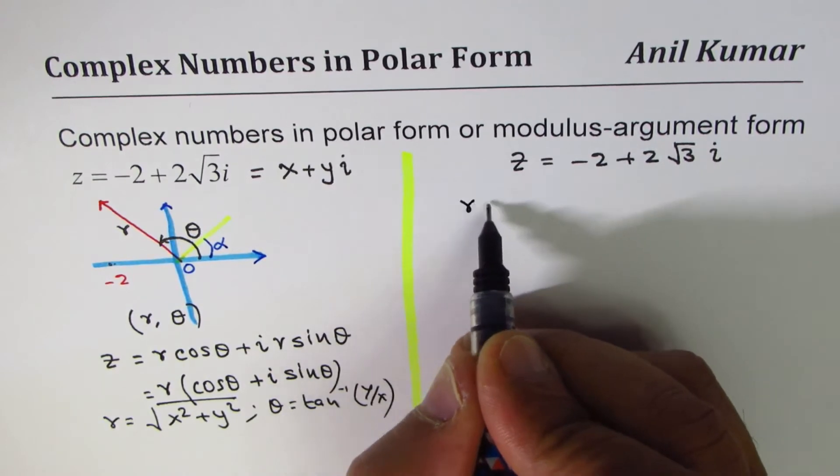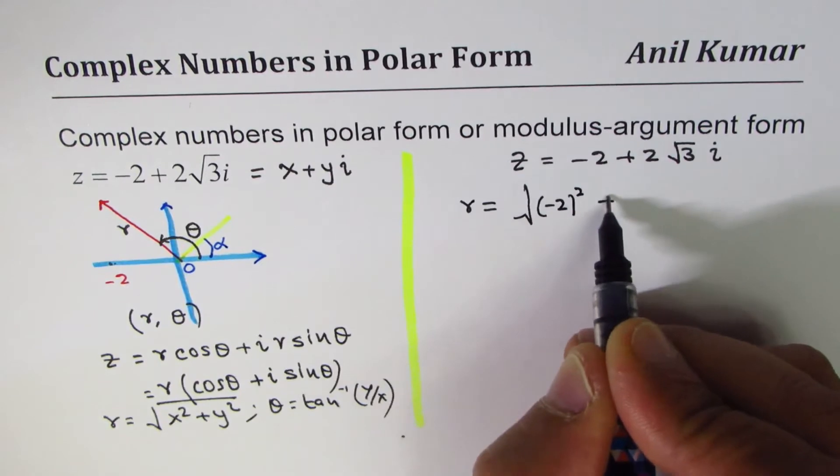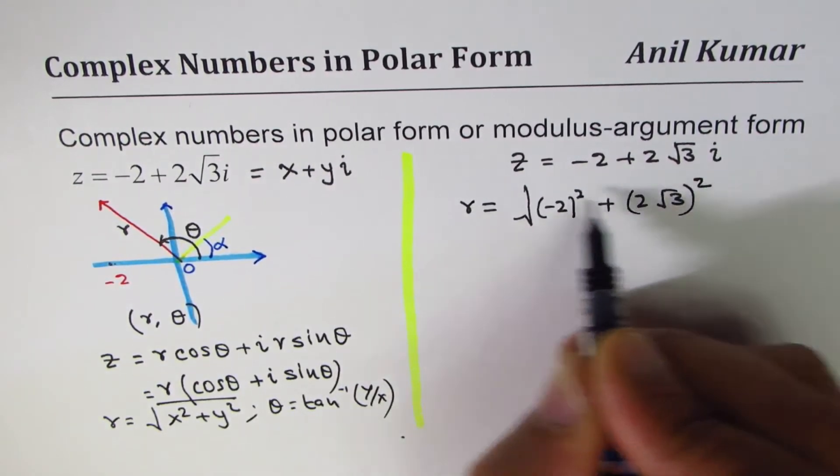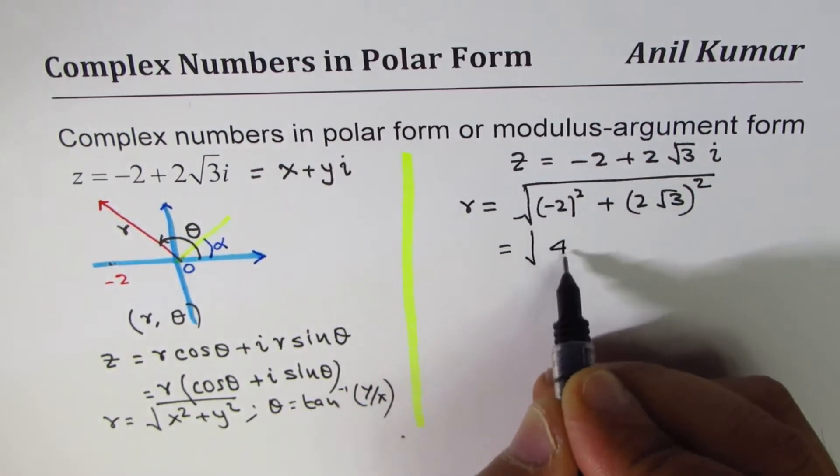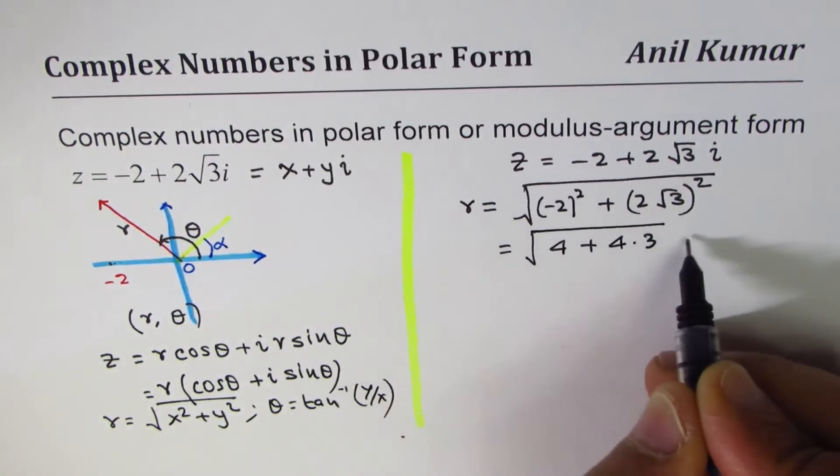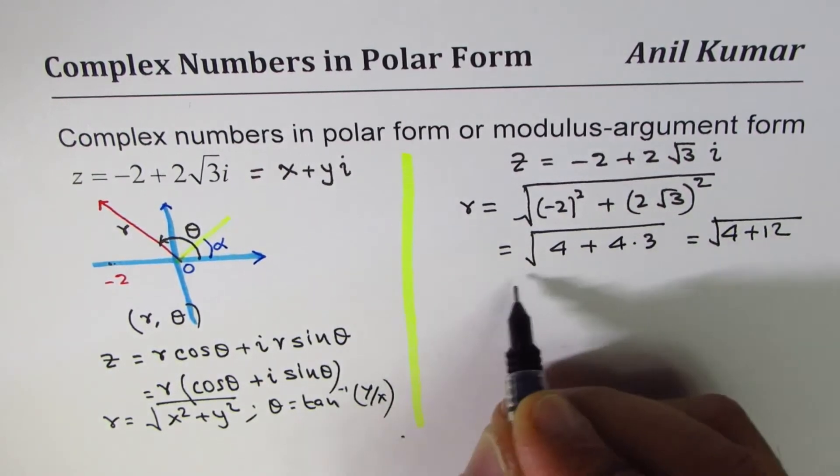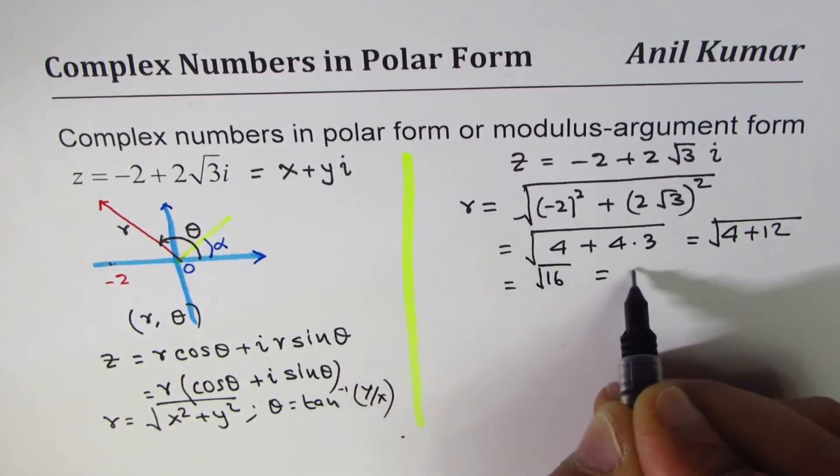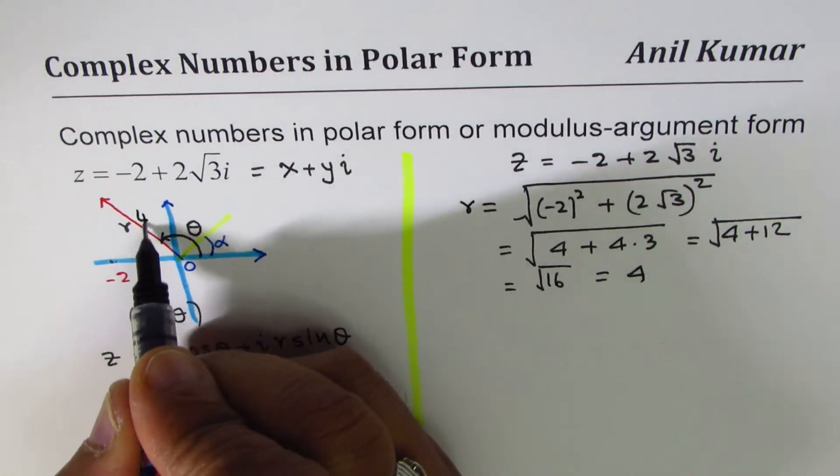So we can say what r is. r is square root of minus 2 square plus 2 square root 3 square. And that gives you square root of, this is 4, plus 4 times 3, which is 4 plus 12, and which is 16, and 4. So the value of r, or this magnitude, is 4 for us.